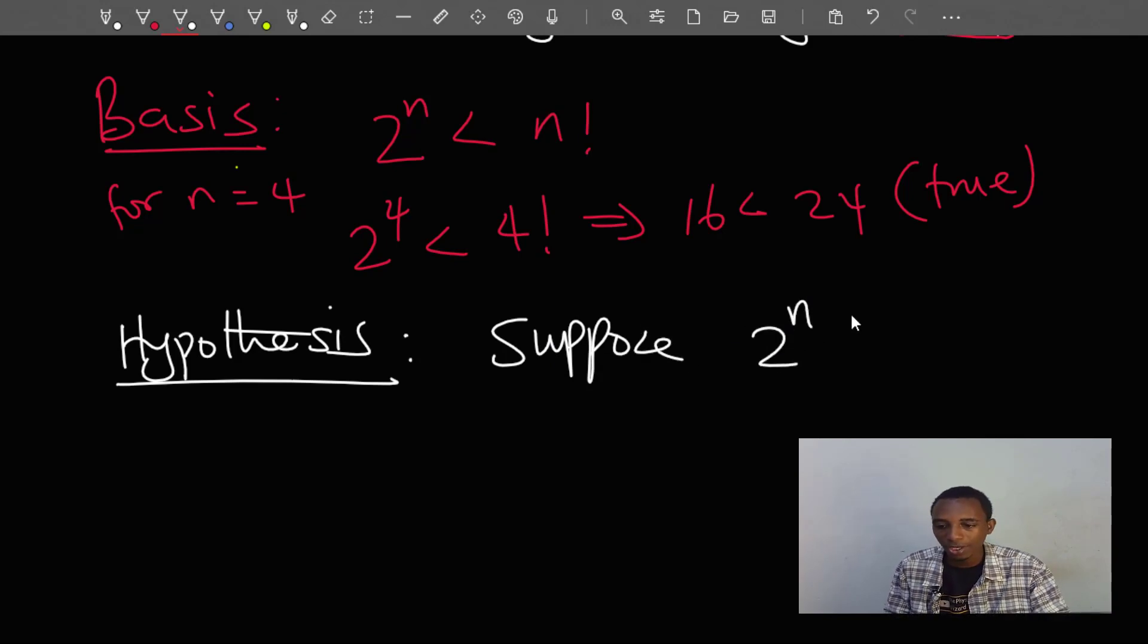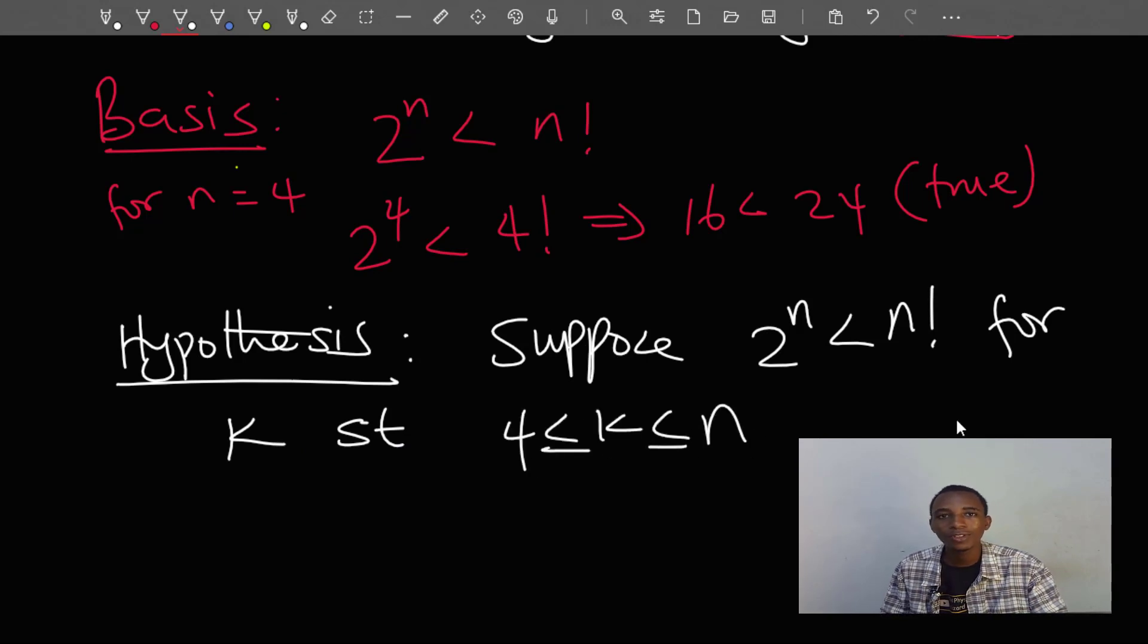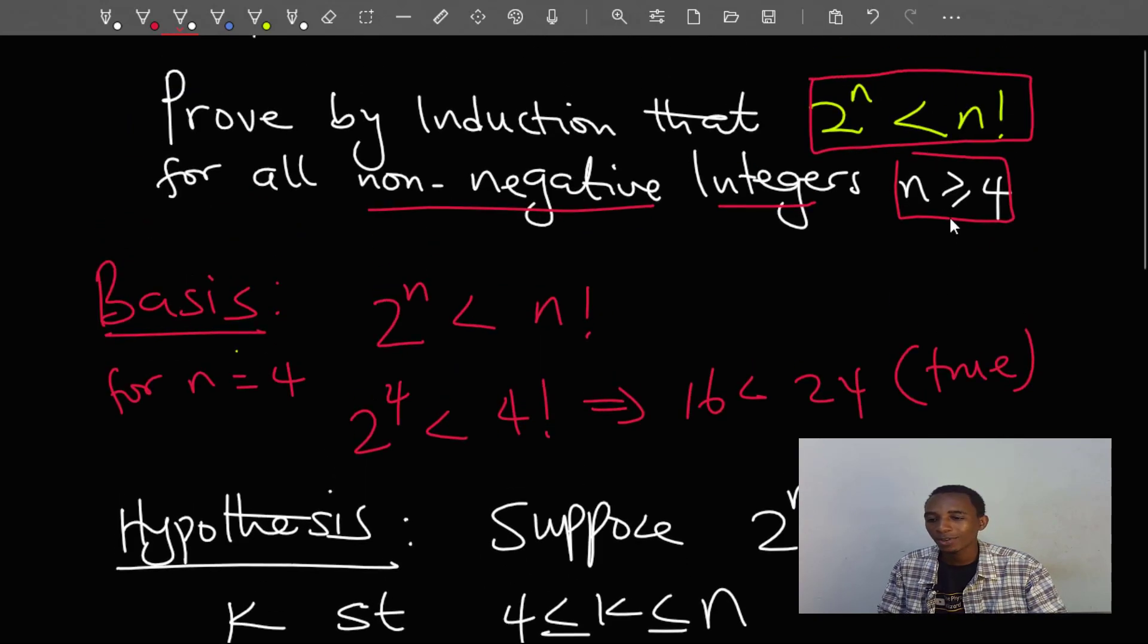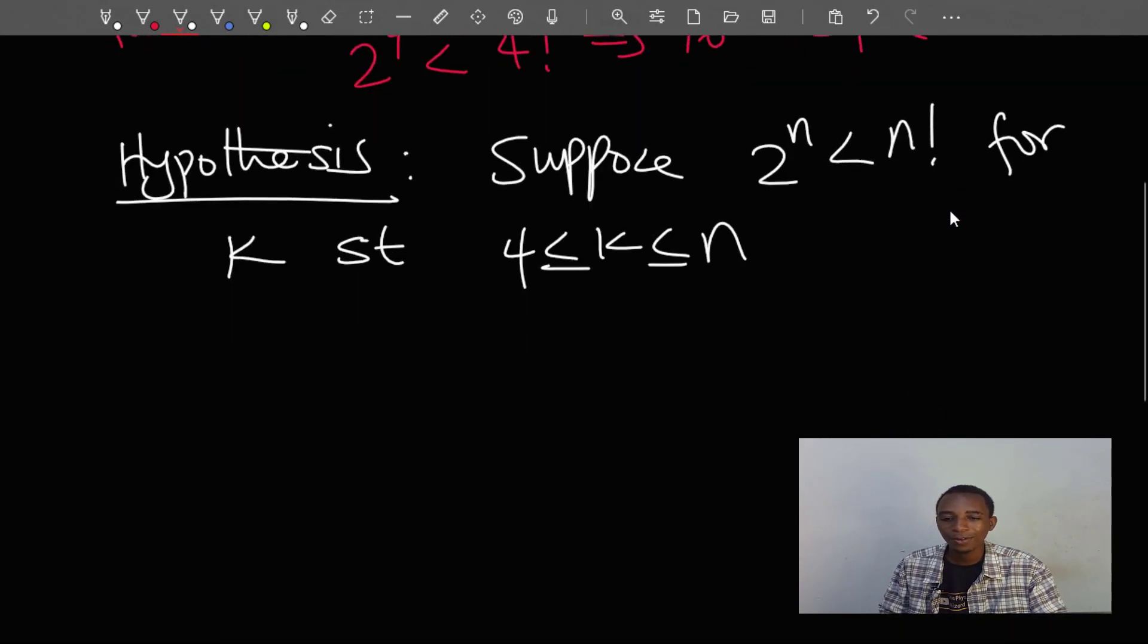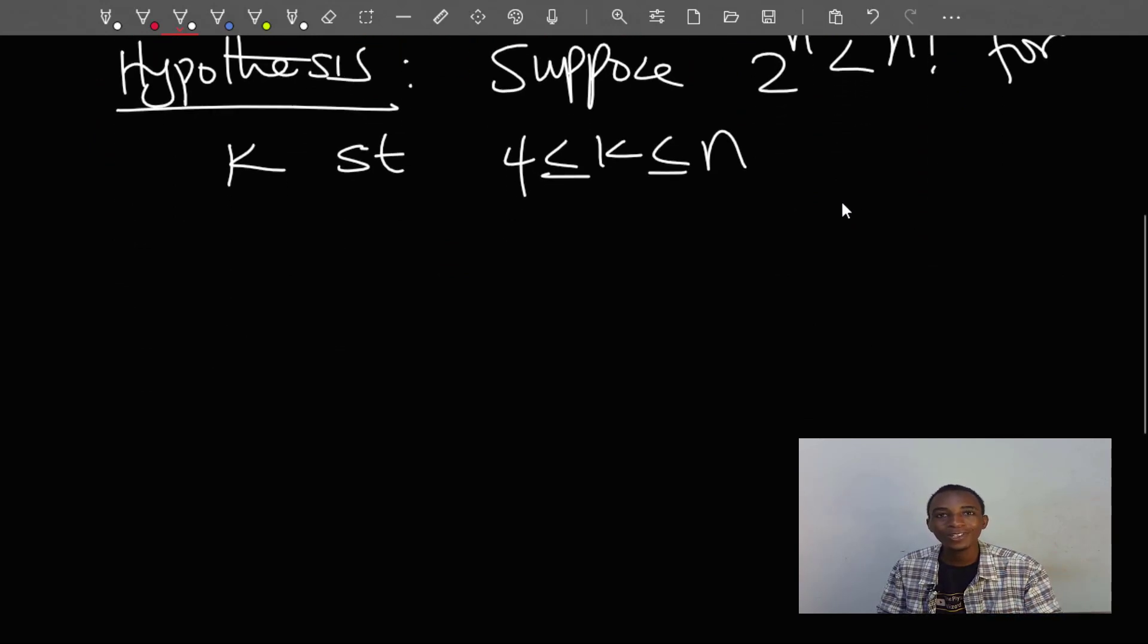For some value of k such that k is in the range. In this case, that should be from 4 to n because n cannot be smaller than 4. So that's the hypothesis. We are making an assumption that this is true, a supposition. But we have to prove this.